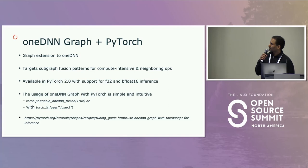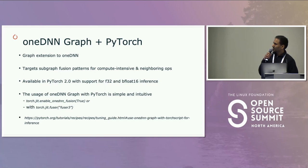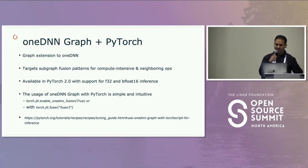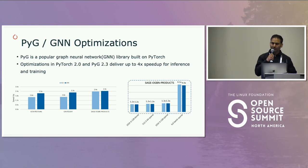The oneDNN graph extension was recently added to oneDNN — it's a graph extension in oneDNN that we've enabled in 2.0. It primarily targets subgraph fusion patterns for compute-intensive ops and neighboring ops, trying to do more aggressive fusions than those available in the existing TorchScript path. This is a beta feature in 2.0 with support for F32 and BFloat16 inference. Usage is simple — you just enable JIT.enable as shown in the previous code snippet. You can expect to see more performance across different models due to the aggressive fusion patterns.